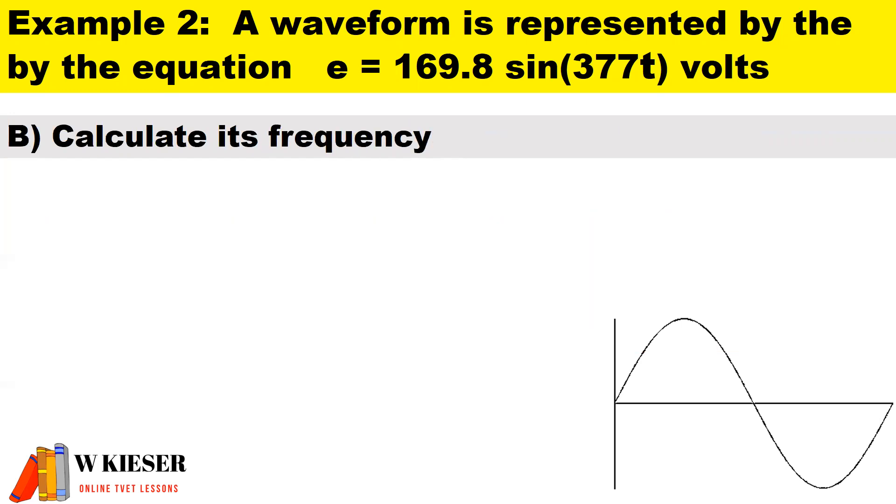In part B of this calculation calculate its frequency. The angular velocity in radians per second is equal to 2 times pi times f. So therefore to determine the frequency it's the angular velocity in radians per second divided by 2 divided by pi and that gives us 60 hertz.